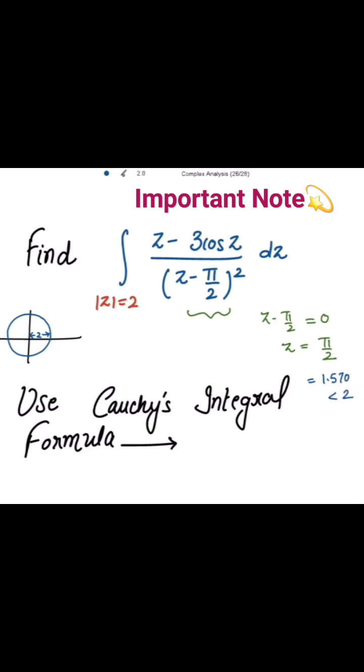Which is strictly less than 2, which is strictly less than the radius of the circle. This 2 is the radius. So, that means this point z equal to pi by 2 lies inside the circle.